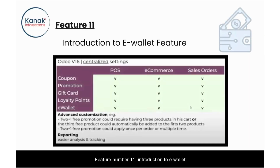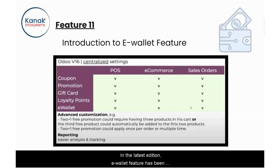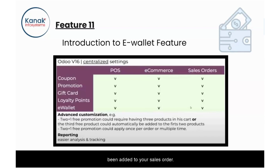Feature number eleven: introduction of e-wallet. In the previous versions, e-wallet was not available in point of sale, e-commerce, and sales order. In the latest edition, the e-wallet feature has been added, and in addition to this, a gift card feature has also been added to your sales order.